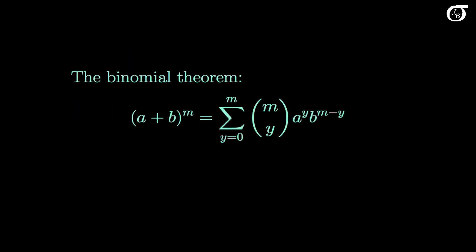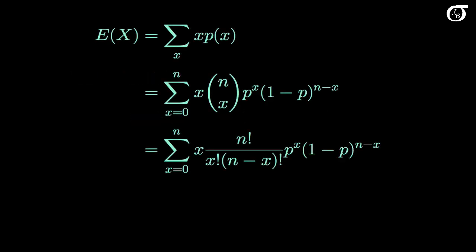Now let's do it from scratch without relying on the relationship with the Bernoulli distribution, which is a little harder. I'm going to assume one thing without explanation: the binomial theorem. The expectation of a discrete random variable x is the sum over all possible values of x of each value of x times its probability of occurring. We substitute in the binomial distribution probability mass function, and we're summing over all possible values of x, which go from 0 to n. Now I'm going to open up the binomial coefficient into its factorial representation. When x is equal to 0, this whole term is equal to 0.